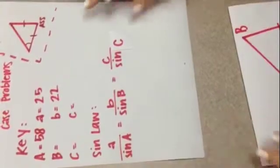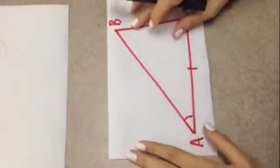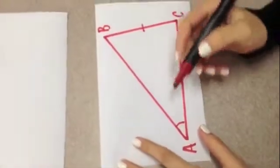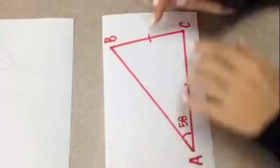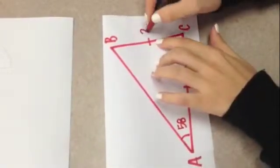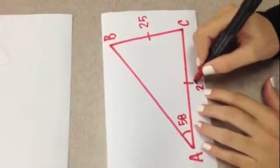We will draw a triangle and label the information given to us. In this case, we are given that angle A is 58 degrees, that side a is 25 centimeters, and side b is 22 centimeters.